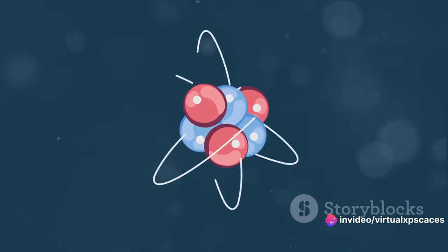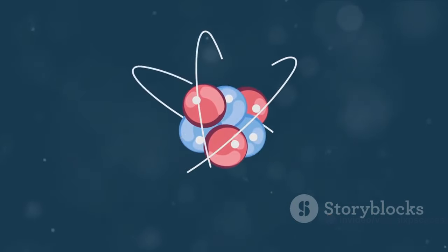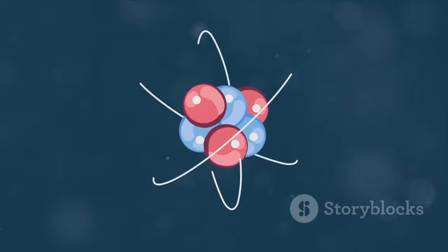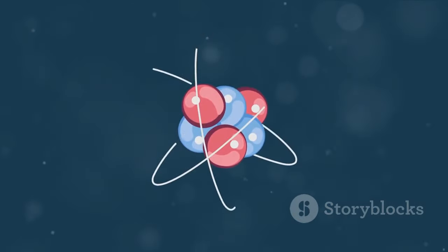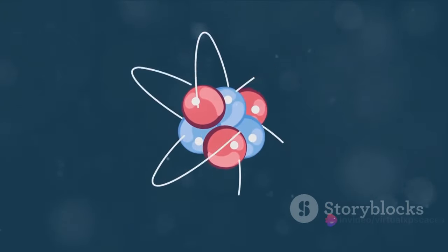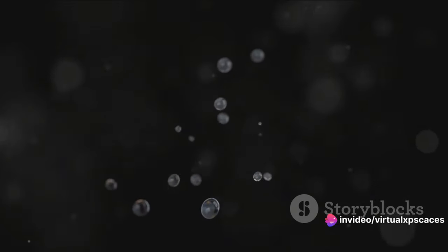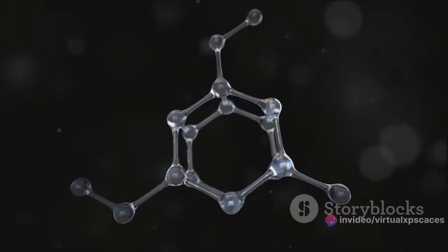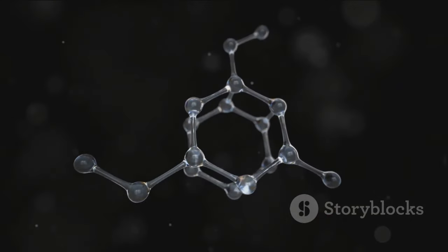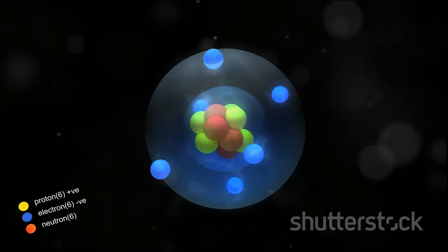Next, we move on to the assembly phase. This is the stage where the blueprint comes to life. Using a technique known as positional assembly, the atoms are meticulously put together one by one to form the desired structure. This process requires an immense level of precision and control. It's akin to threading a needle, except the needle is an atom, and the thread is another atom.